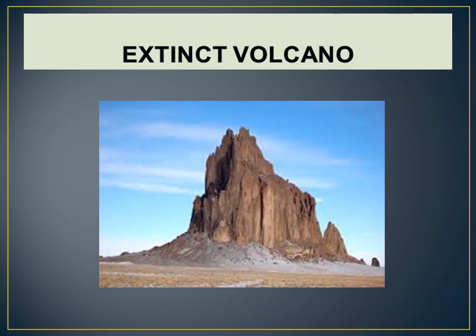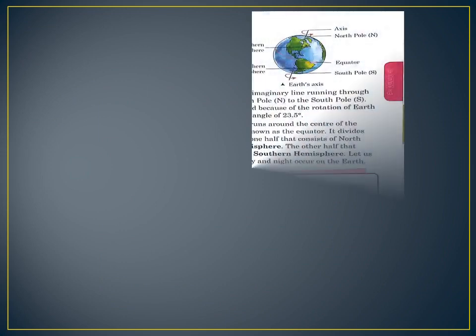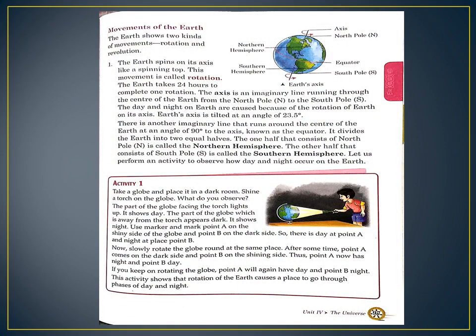Now we will move to the next page, page number 97. We are going to discuss the movement of the earth. We know the earth has two types of movements. The earth shows two kinds of movements: one is called rotation and the second one is called revolution. Follow the picture given on page number 97 — all of you will draw the picture.